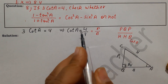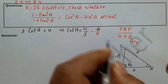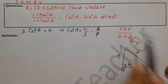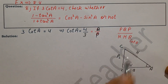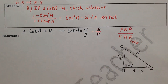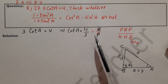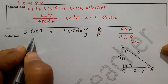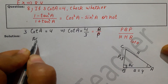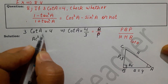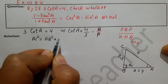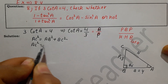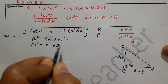Cot is B upon P. So base is 4 and perpendicular is 3. Now we have to find the hypotenuse. Hypotenuse² equals base² plus perpendicular², so that is 4² plus 3², which gives 16 plus 9.